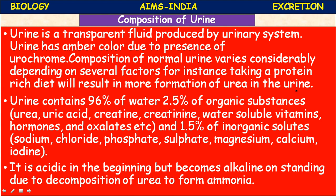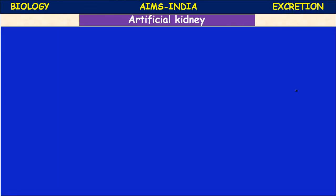Urine is slightly acidic - its pH is less than 7 initially - but it becomes alkaline on standing, due to decomposition of urea to form ammonia. If urine is stored for a long time, urea is converted to ammonia, causing the pH to increase above 5.7.